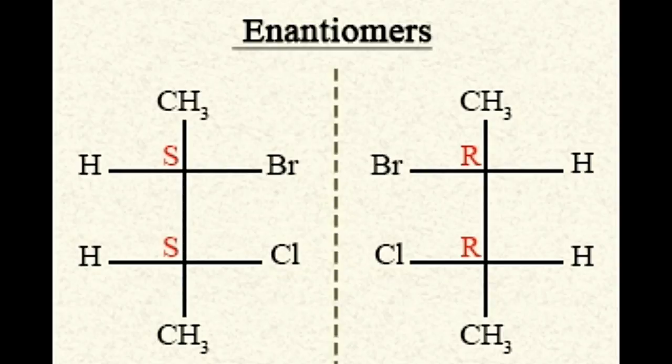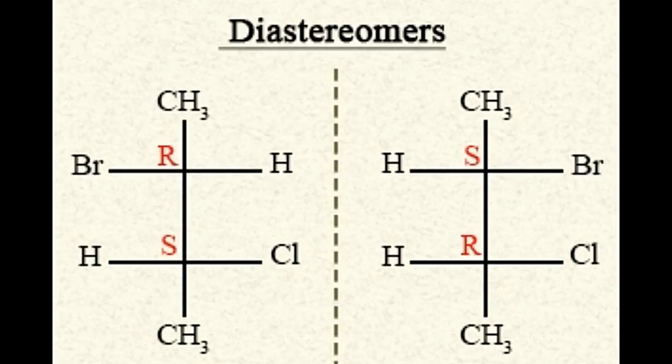Properties. Enantiomers of a compound have the same physical properties except optical activity, but differ in chemical properties. Diastereomers of a compound differ in their physical as well as chemical properties.